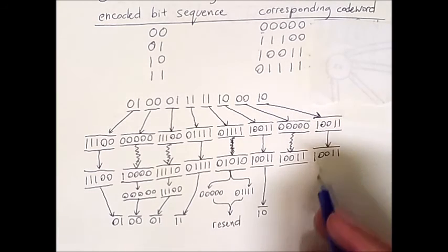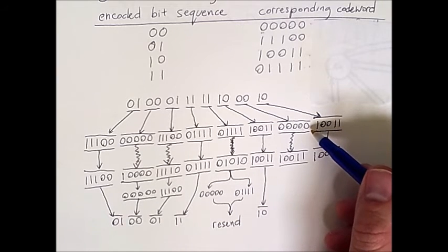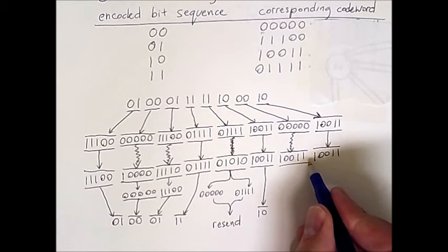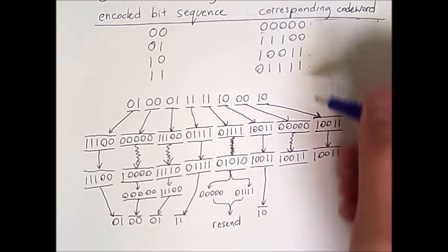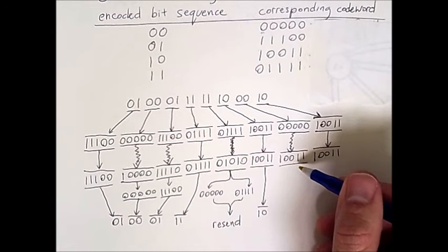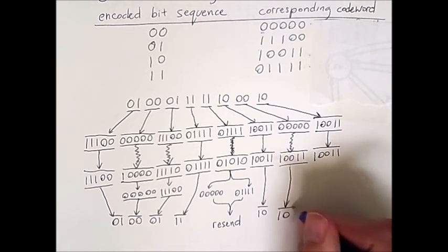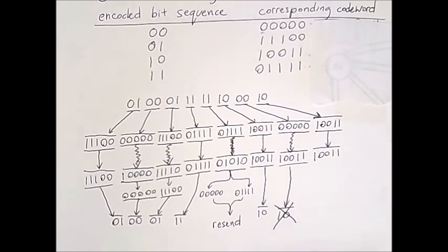Now here we have a somewhat serious problem. The original codeword was five zeros. Three bit errors occurred to give us the sequence 10011. This is actually a valid codeword. So when the receiver sees this, it will simply decode it to 10. However, we know, because we can tell what the sender actually sent, this is actually incorrect. So we have a case where an undetectable error was transmitted.